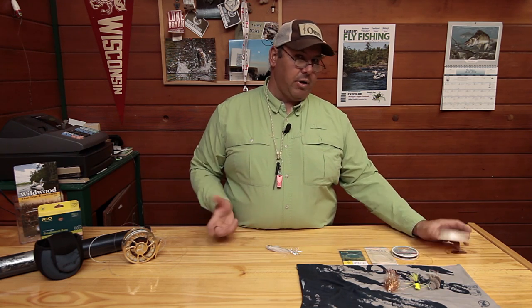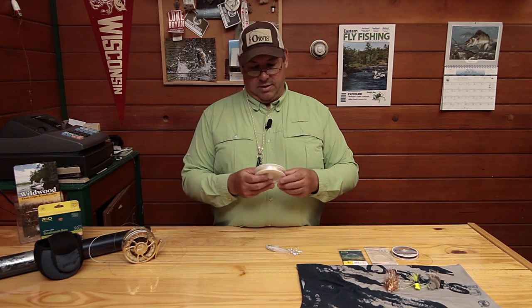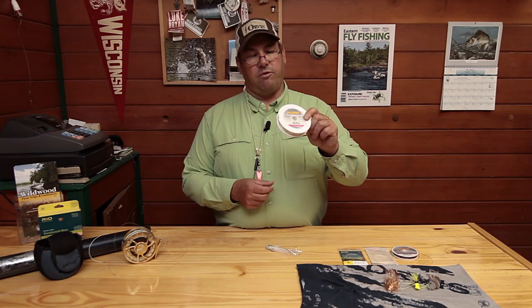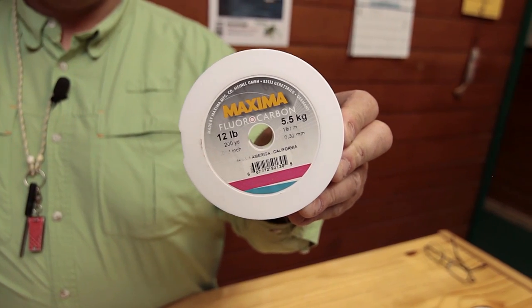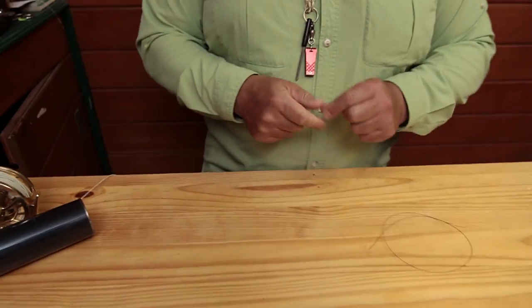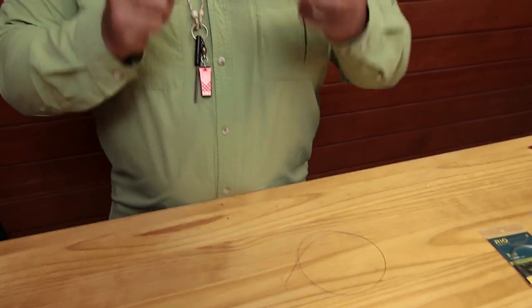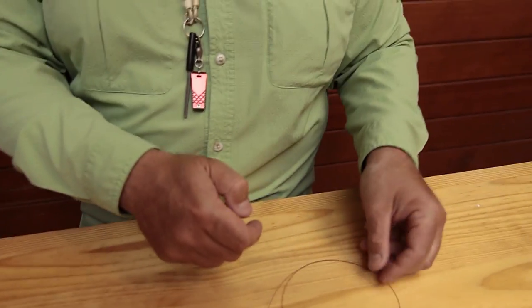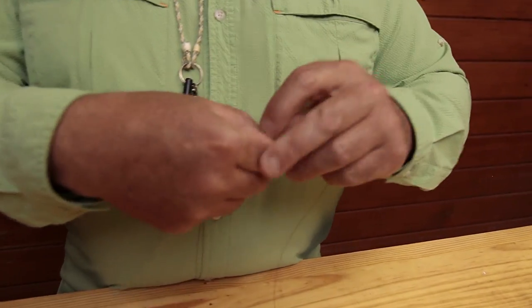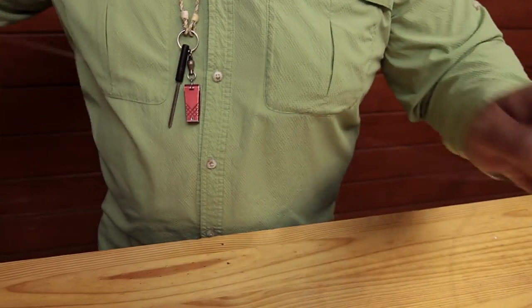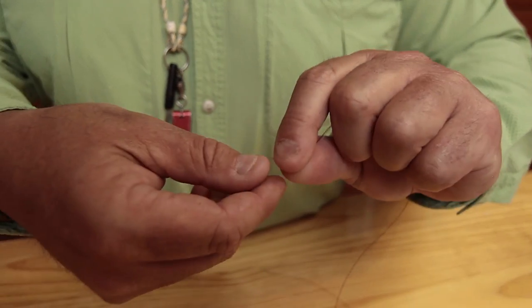And if I start getting a lot of pike bite offs, small hammer handle pike, I'll switch to a twelve pound fluorocarbon and that usually cuts my bite offs in half. So if I'm replacing my tippet, I use a pretty simple strong knot called the double uni. I think it's the best knot out there for attaching tippet of any size.